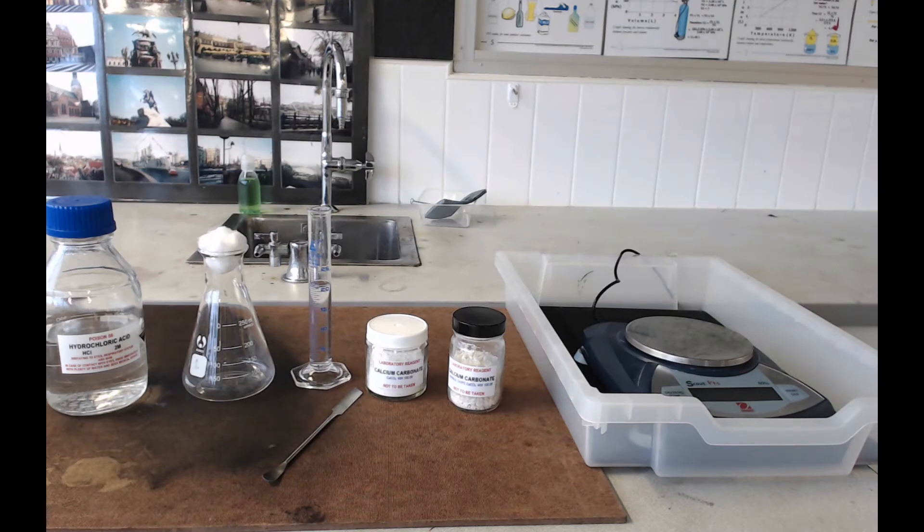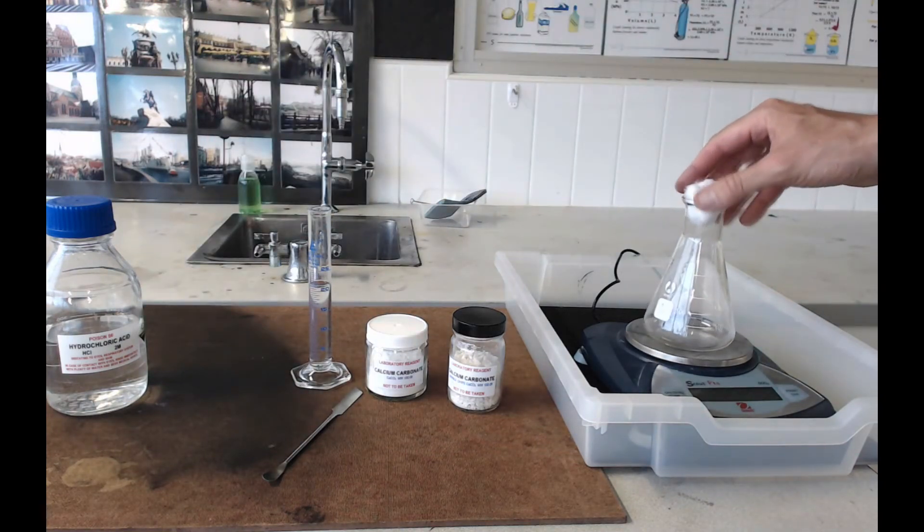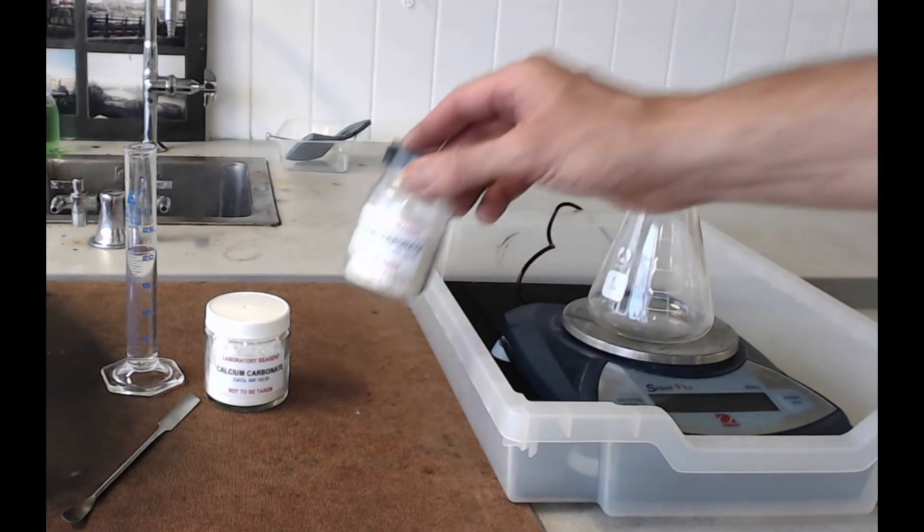Now the next thing you need to do is put your conical flask on the balance. It might be a good idea to reset this balance, because what you want to do now is take two grams of whichever calcium carbonate you're going to use first and weigh it out on the balance.